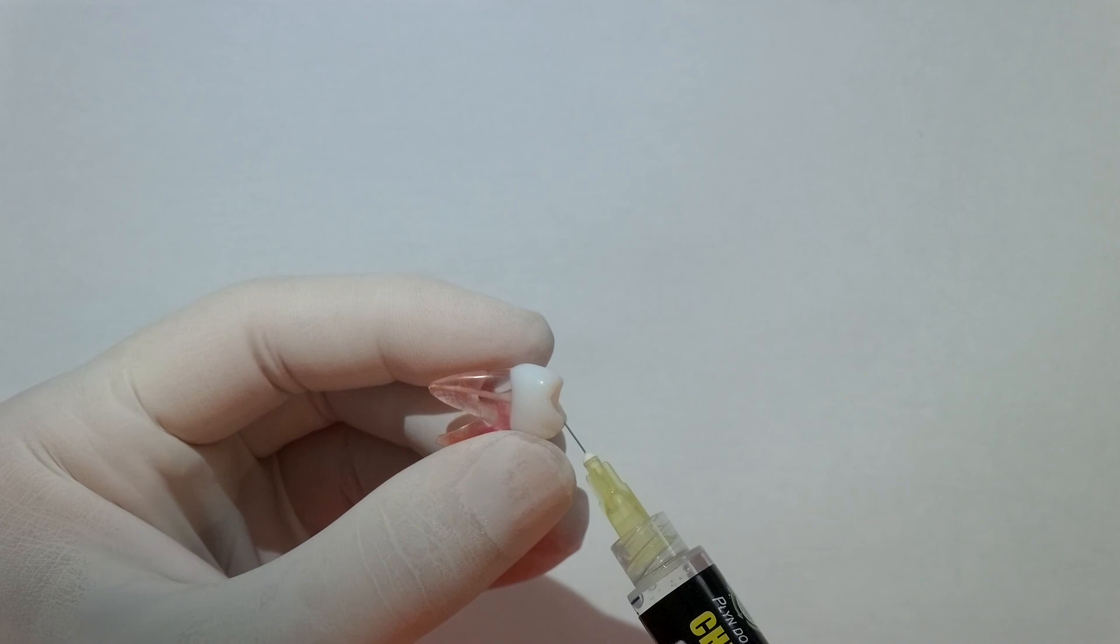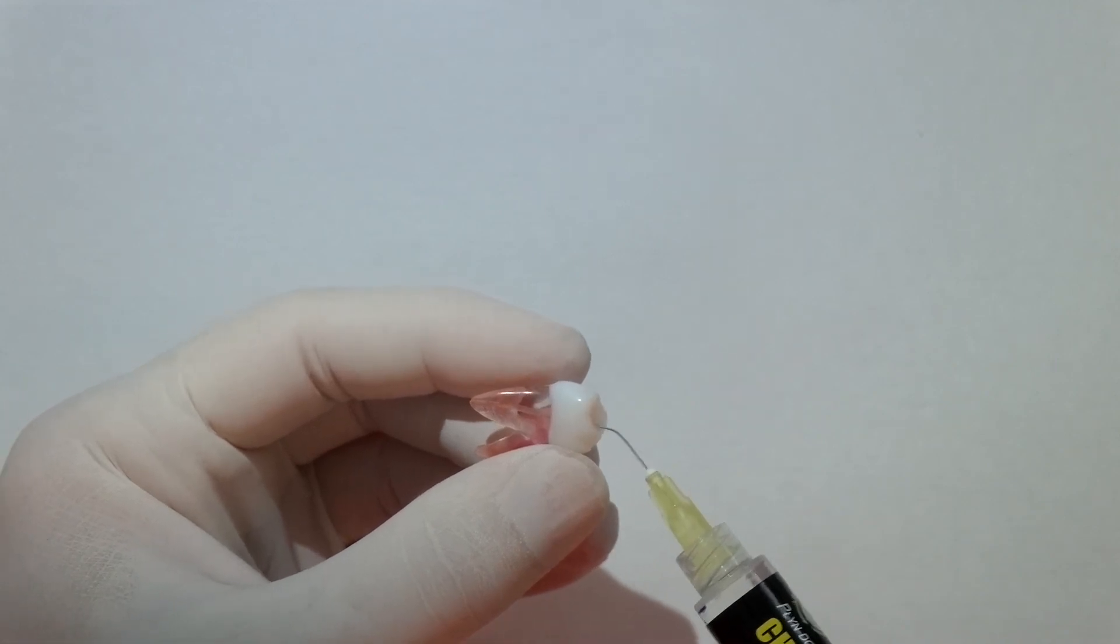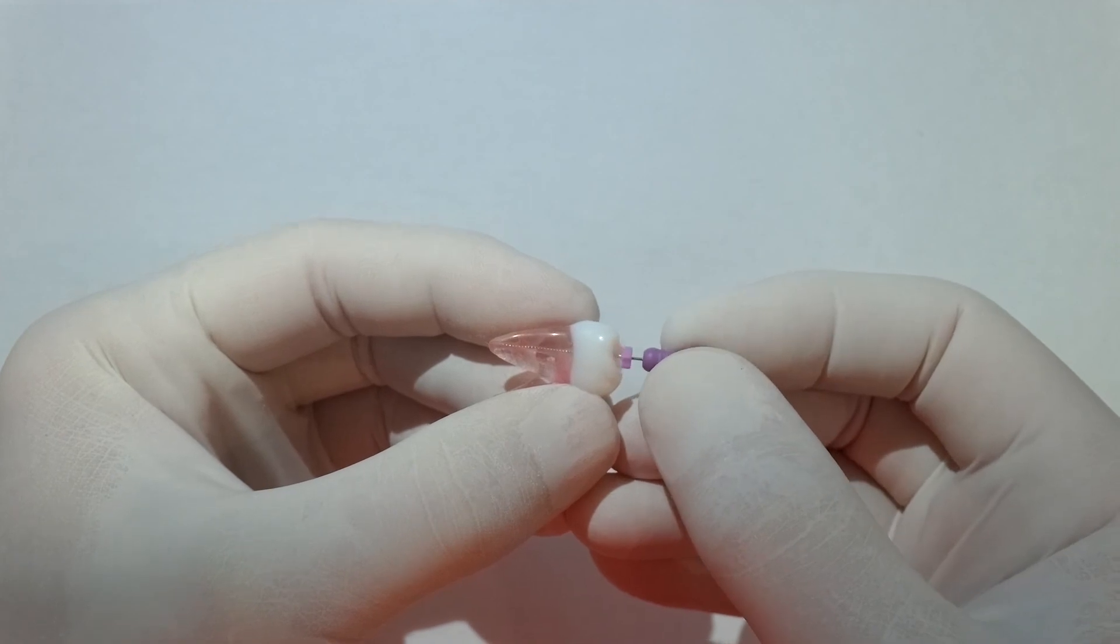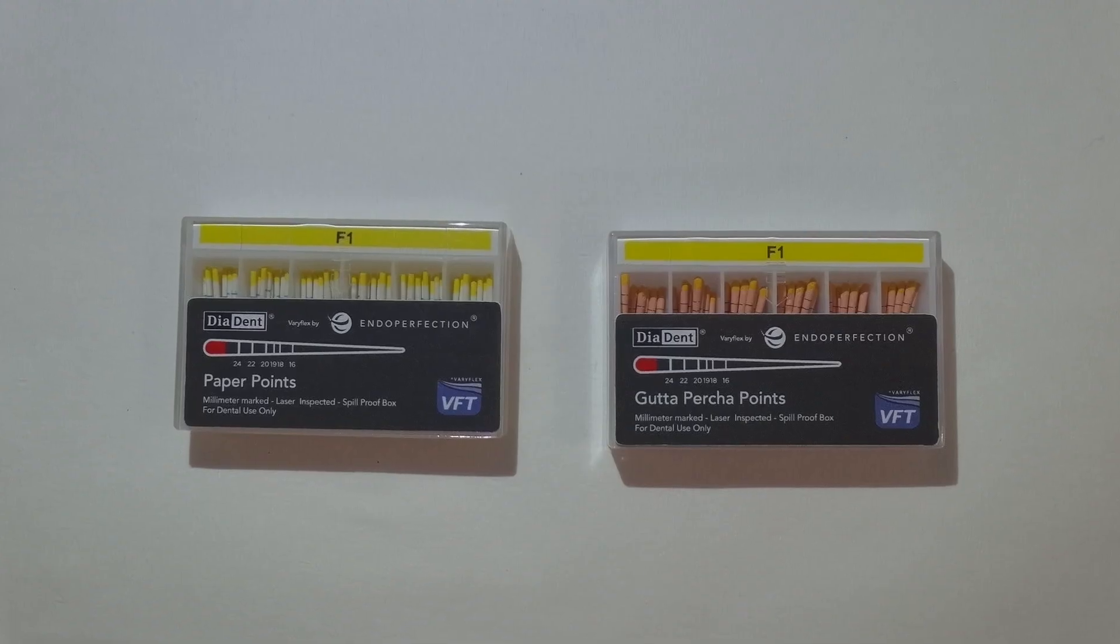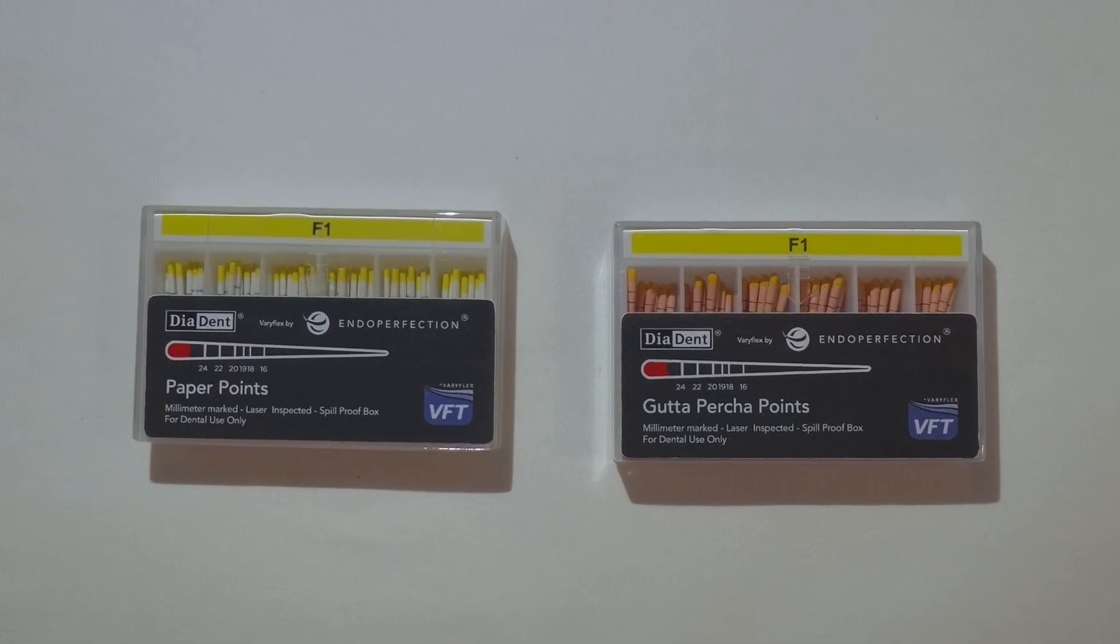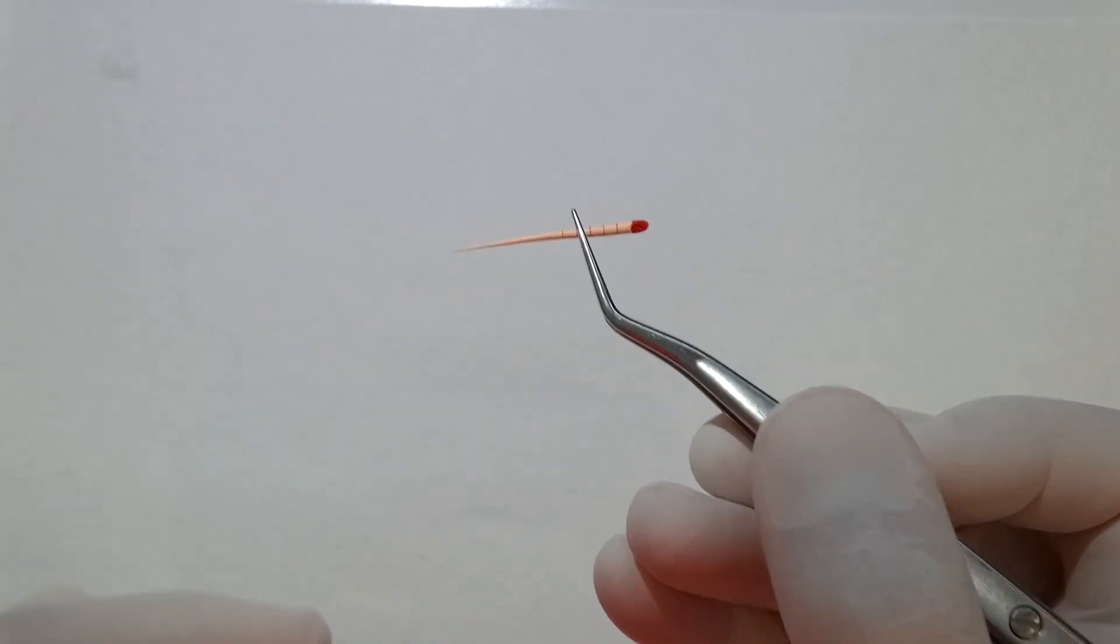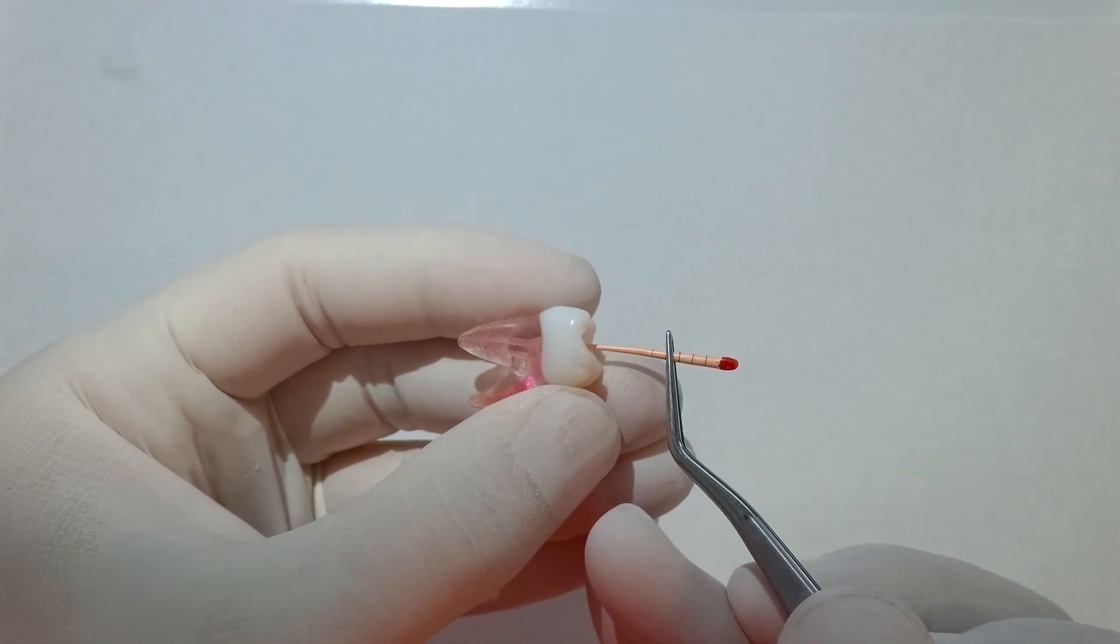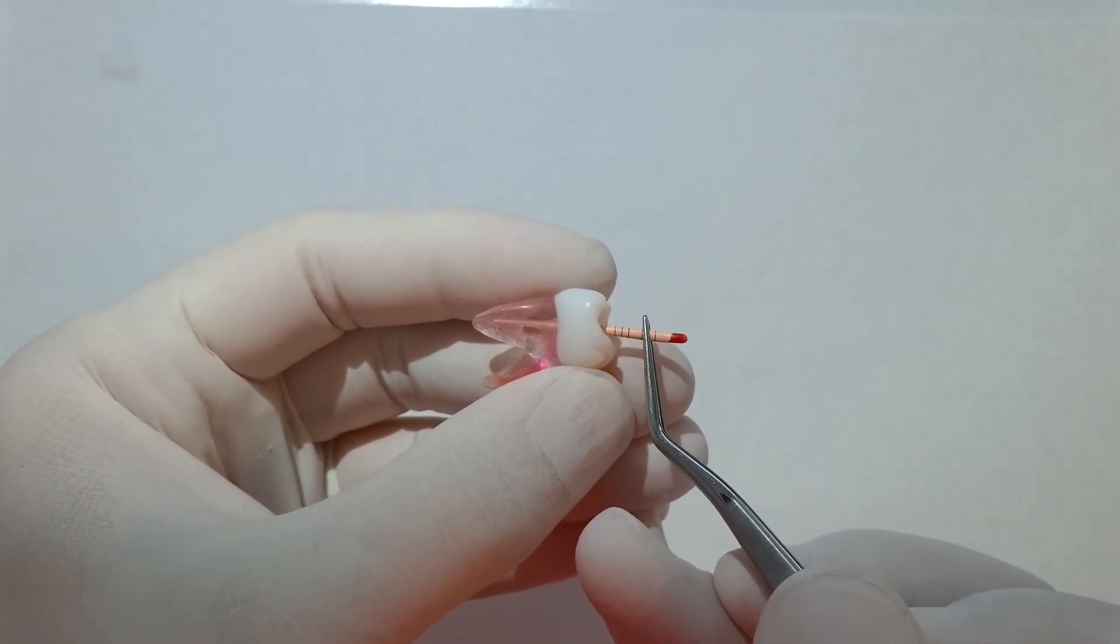Final irrigation, patency file, and then just to show you, we've got matching GP cones with all the file systems here. We've gone to the F2, so we've got our matching F2 GP cone. Once we place this in to length, you can see through the tooth that fits beautifully.